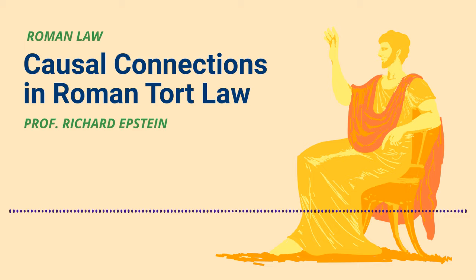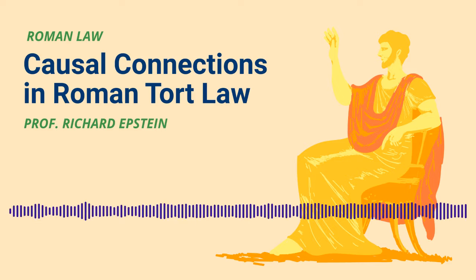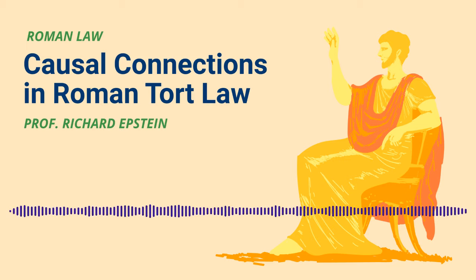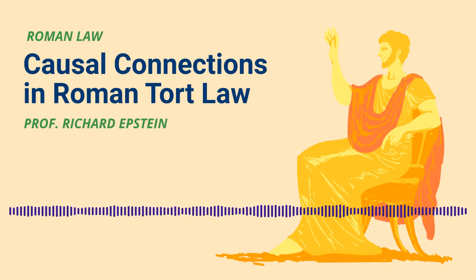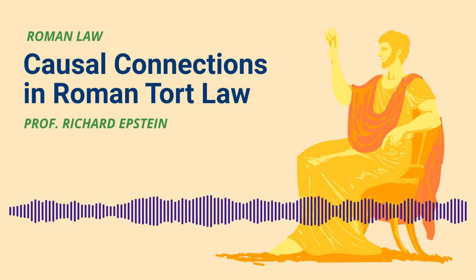Modern American law makes an absolutely fatal mistake, in my judgment, because it does not start with the close cases and then work out. What it does is introduce a very fuzzy notion of but-for causation — saying, but for the occurrence of this, that would not have happened — a sort of counterfactual situation. There is no very tight physical or temporal connection inherent in the but-for formulation. Everybody knows it may be a first approximation for causation, but you have to add other stuff in, and the most common candidate is foreseeability, which really doesn't do the kind of work that you need.